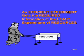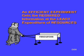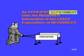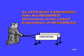And finally, we get this information at the least resources. The key elements then are experiment, required, and resources.